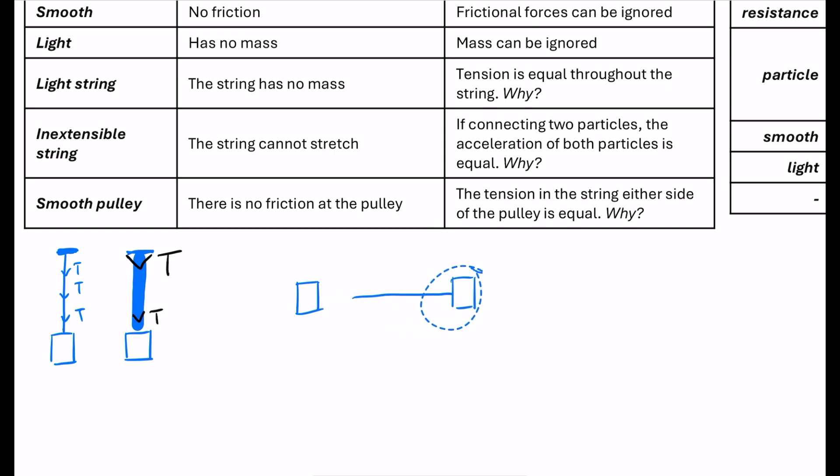So what I mean by this is if it is an inextensible string, they have the same acceleration. Okay. And we often use this in calculations because when we do connected particles, we will often do simultaneous equations and we have to use the same value of the acceleration for both of them. So that's actually where we use it in the calculations.